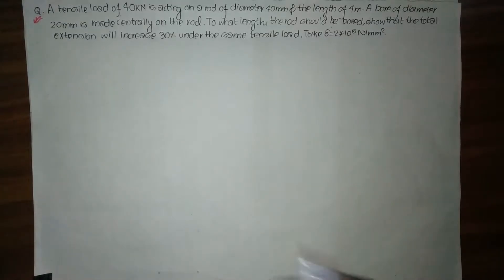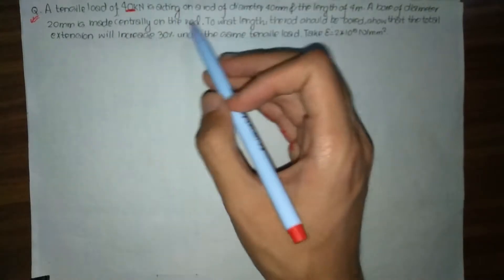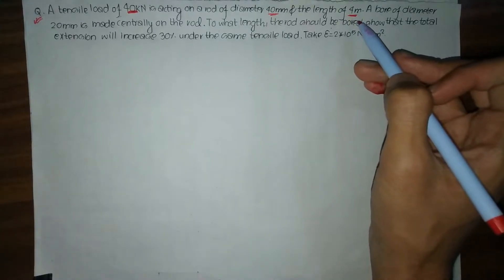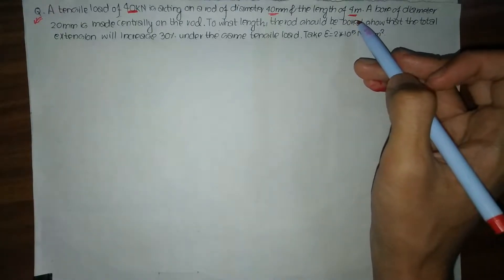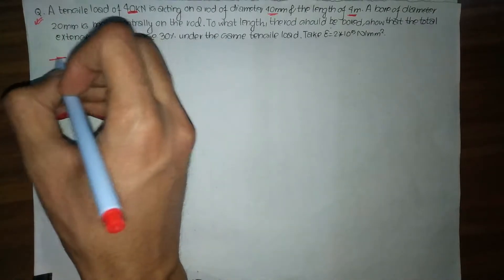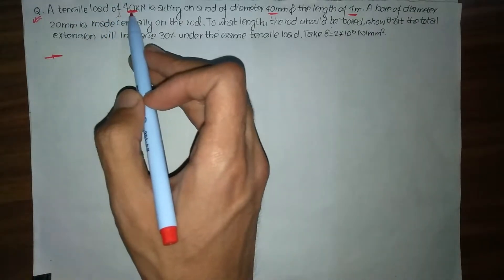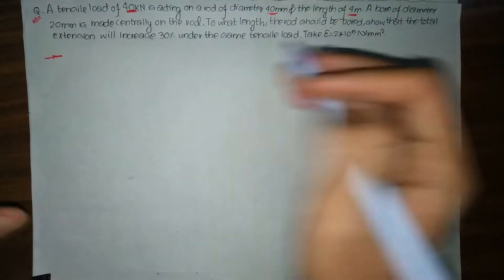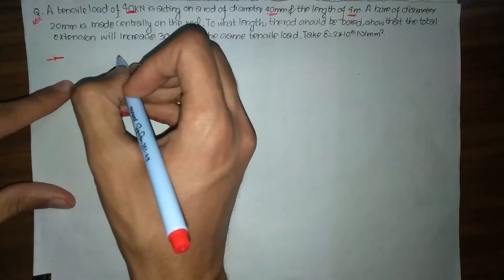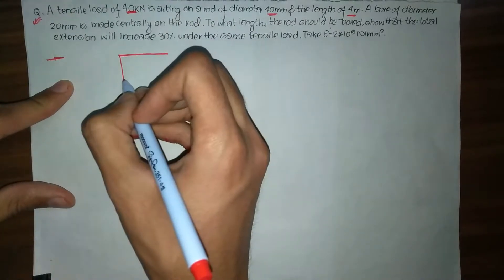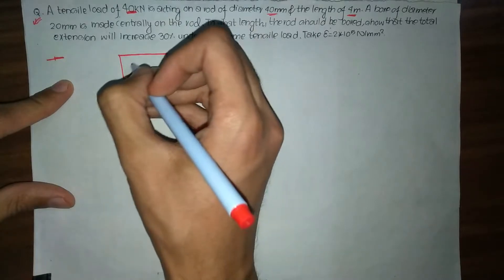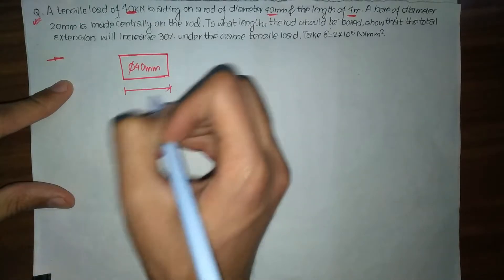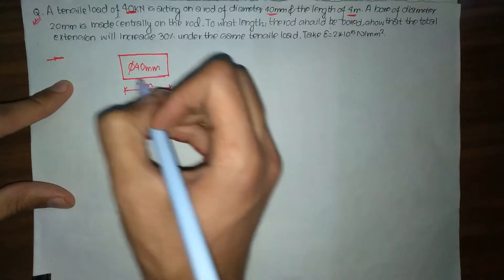So what we have been given in our question is: a tensile load of 40 kN is acting on a rod of diameter 40 mm and length of 4 m. Before reading the whole question I am reading the first sentence and I am going to draw a figure according to it. So I have a tensile load of 40 kN acting on a rod of diameter 40 mm and length 4 m.